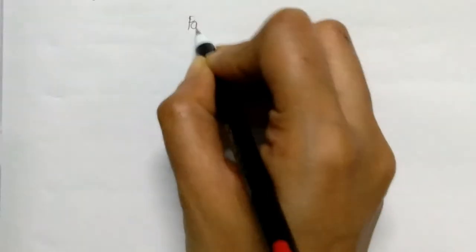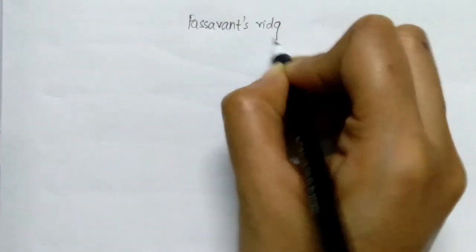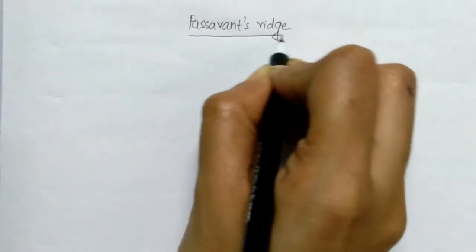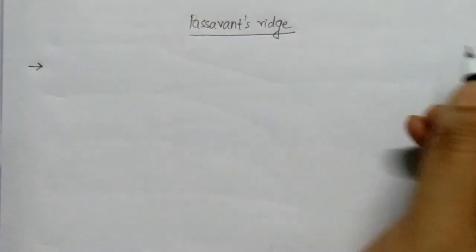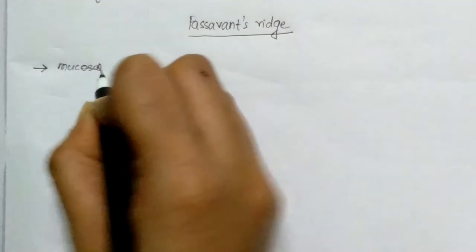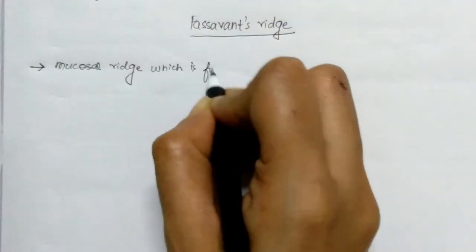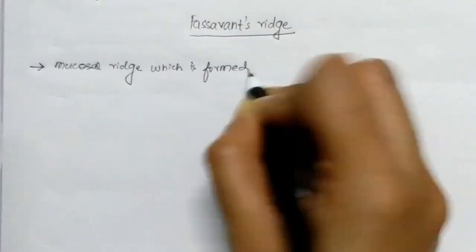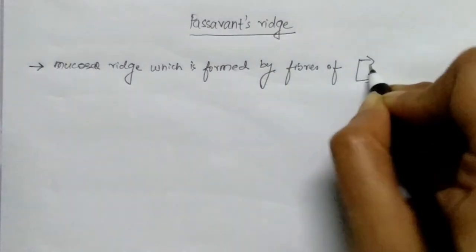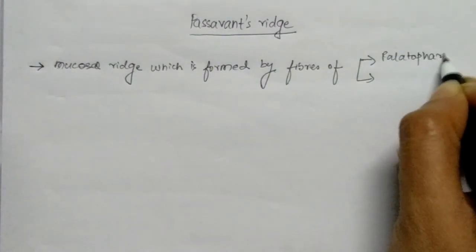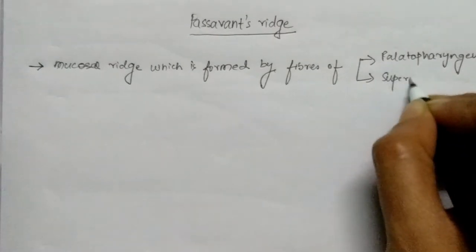In this video, we will be discussing the Passavant's ridge. The first point is: what is a Passavant's ridge? It is a mucosal ridge which is formed by the fibers of two muscles. These muscles are palatopharyngeus and superior constrictor of the pharynx.